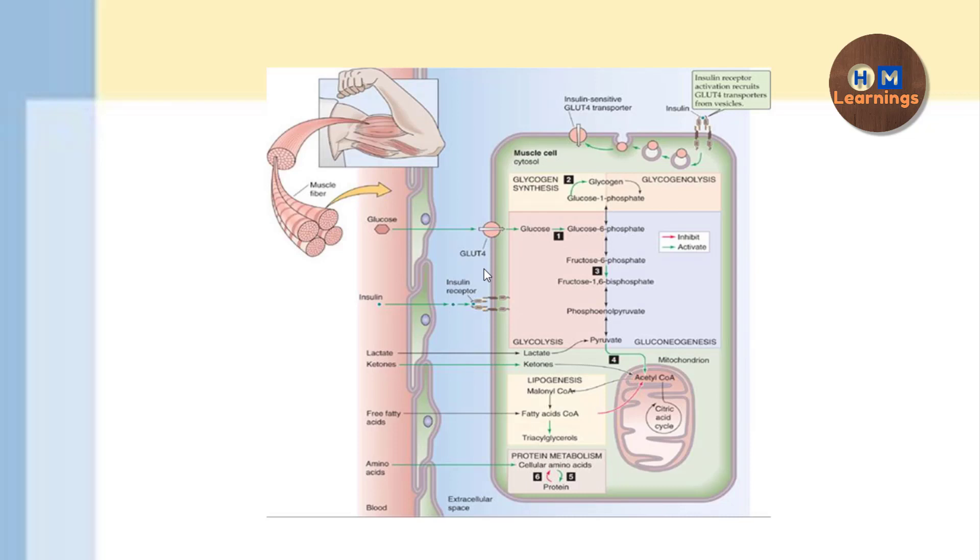The very first action is that it is going to cause the translocation of the GLUT4 on the membrane. GLUT4 is basically present inside the vesicles in the muscle cells. The vesicles under the influence of insulin start moving towards the membrane and then they will be incorporated on its membrane.